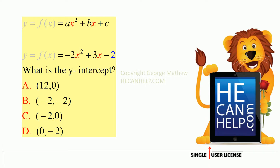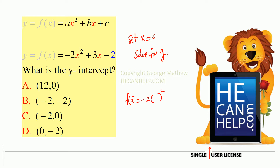To find the y-intercept, set x equal to 0 and solve for y. So when you put x equals 0, f of 0 becomes: wherever we have x, substitute 0. The x terms become 0, so what is left is negative 2.